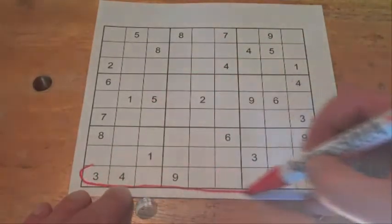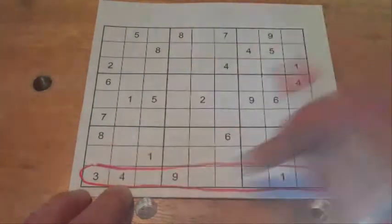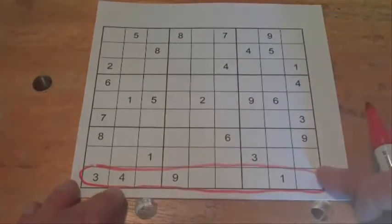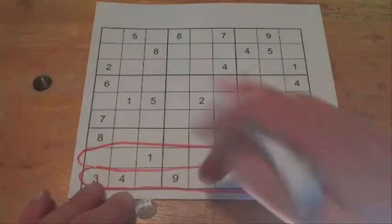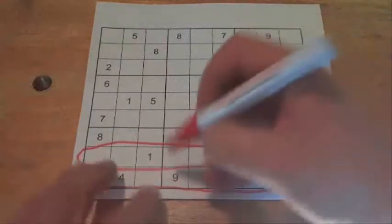So that means 1 and 3 can't appear again anywhere on that row, and we've got 1 and 3 again there, so they can't appear anywhere on that row.